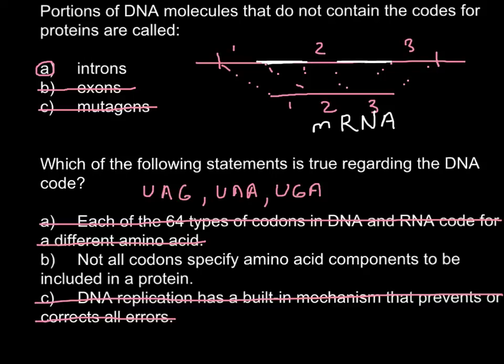And we also call them amber, ochre, and opal. So these stop codons serve for the end of the translation of the messenger RNA into protein. And when the ribosome reaches these three nucleotides, the protein would be released and also leads to dissociation of the ribosome subunits from the messenger RNA.